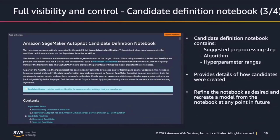The candidate definition notebook contains all the suggested pre-processing steps that Autopilot took. It lists out all the algorithms chosen and the range of hyperparameters, providing details of how these candidates were generated. You can refine these notebooks as you desire and recreate the model from the notebook at any point in the future. If you choose to customize the hyperparameters within your candidate definition notebook, you can run the notebook in SageMaker Notebooks as it's fully runnable code.